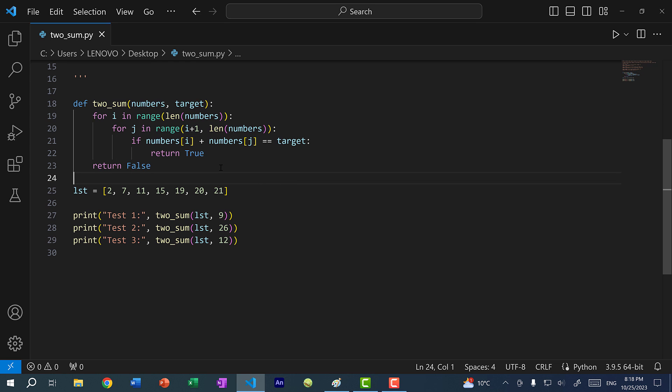So what is the runtime of this solution? Well, we have a for loop here that goes through the numbers from 0 to n where n is the length of the list, and then we have another for loop here. So you might be thinking that we have two nested for loops and therefore it is n squared, and you would be partially correct. The runtime is O(n²), but it is not because we have two nested for loops.